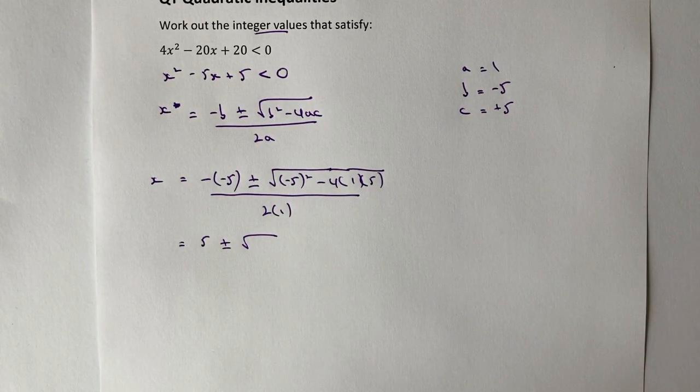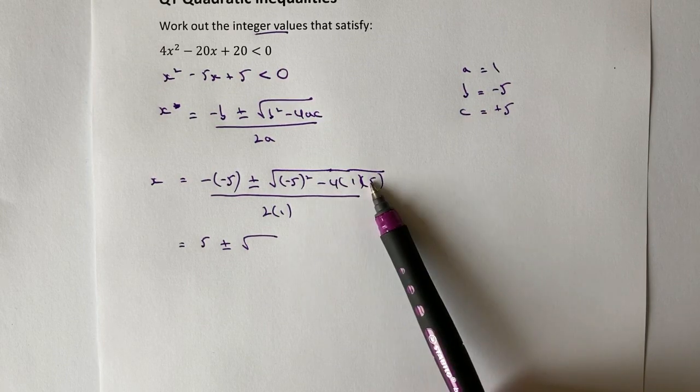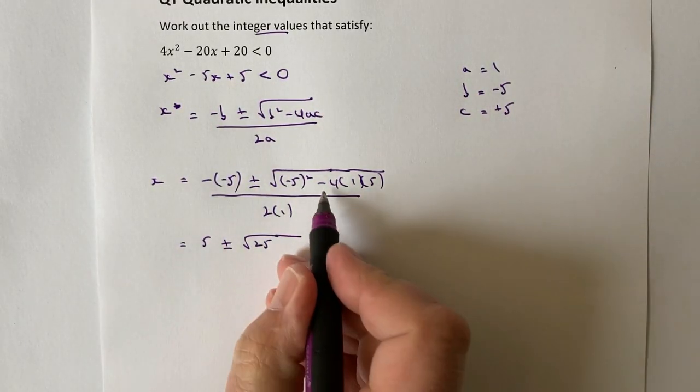Now what I generally tend to do is I work these two things out separately just because it's a little bit easier. And sometimes where you get negative values of c, it just means you've got a negative times a negative. In this particular case, it's going to be a positive. So I've got (-5)² is 25, and then I've got -4 × 1 is -4 times 5 is going to be -20. And that's all divided by 2.